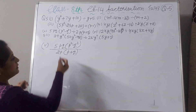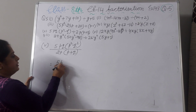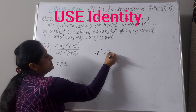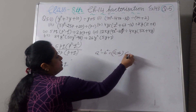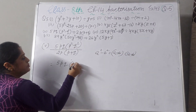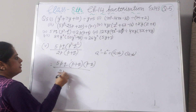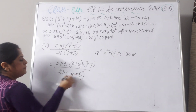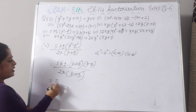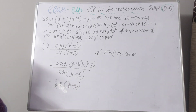Now fifth part: 5pq(p squared minus q squared) divided by 2p(p plus q). We will use the identity a squared minus b squared equals (a plus b)(a minus b). In place of p squared minus q squared, write (p plus q)(p minus q). So we have 5pq(p plus q)(p minus q) divided by 2p(p plus q). Cancel p plus q, and cancel p with p, giving the answer 5q(p minus q) divided by 2.